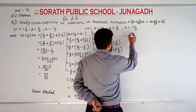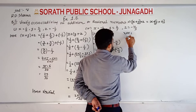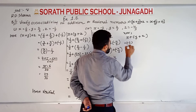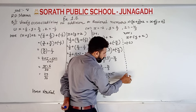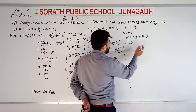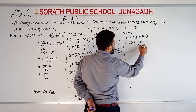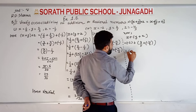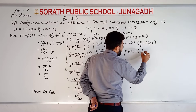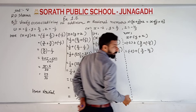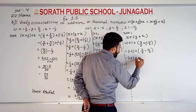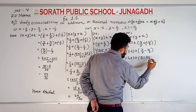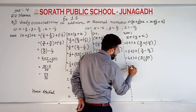Now check the second condition: x plus y plus z. So here x is minus 2 as it is, plus what is the value of y — 3 by 5, plus what is the value of z — minus 4 upon 3. So minus 2 as it is, plus 3 by 5 plus minus 4 by 3. Again cross multiplication: three threes are nine, sign as it is, minus five fours are twenty, and denominator is fifteen. Minus 2 as it is.